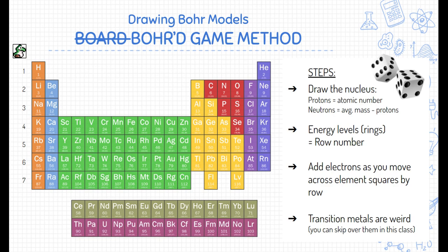The steps are: first, we're going to draw the nucleus. We do that by knowing how many protons and neutrons are in there. Next, we'll draw the energy levels or how many rings that atom has. That's related to the row number or the period number. Over on the left-hand side of this periodic table, you can see that there are seven periods. We're only ever going to have up to seven rings so far.